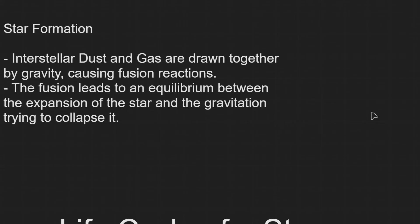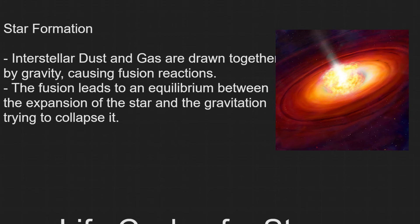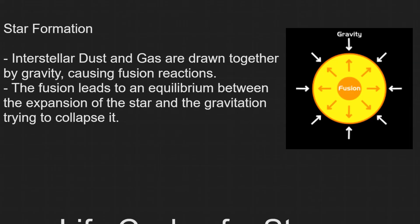How is a star actually formed? It all starts from an interstellar dust and gas cloud that are drawn together by the force of gravity. The temperature eventually rises, causing fusion reactions. The fusion leads to an equilibrium between the expansion of the star and the gravitation that is trying to collapse it.